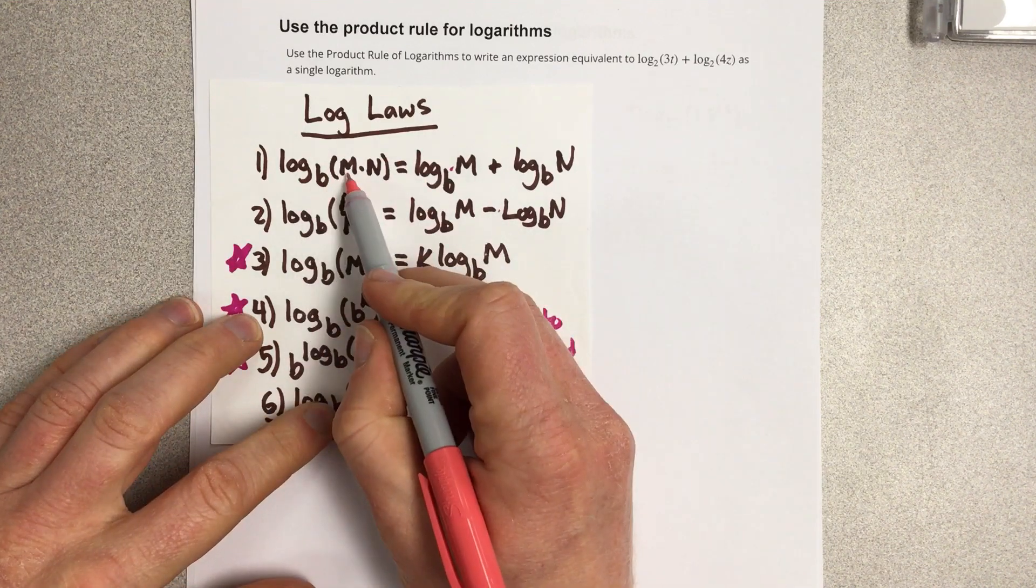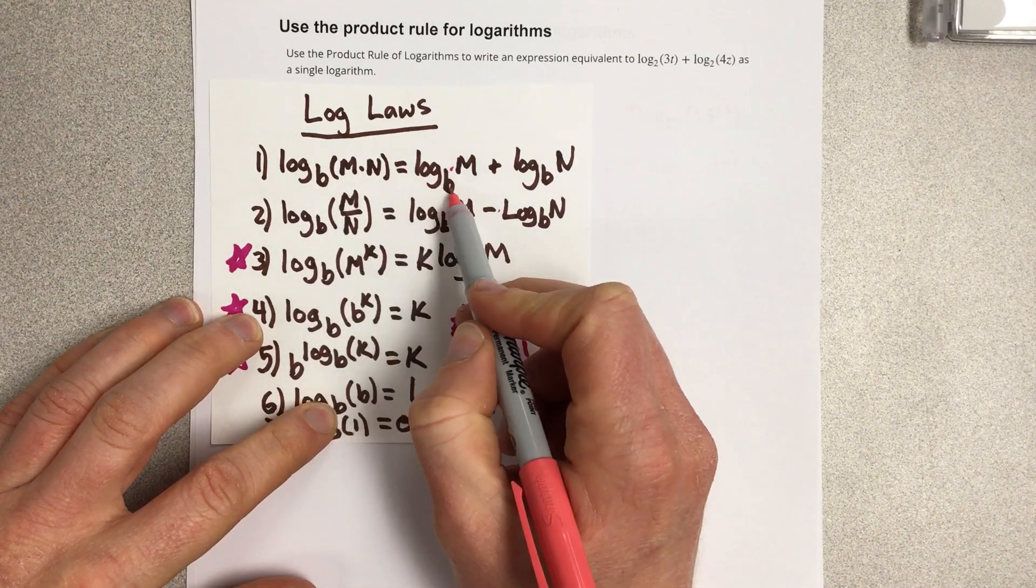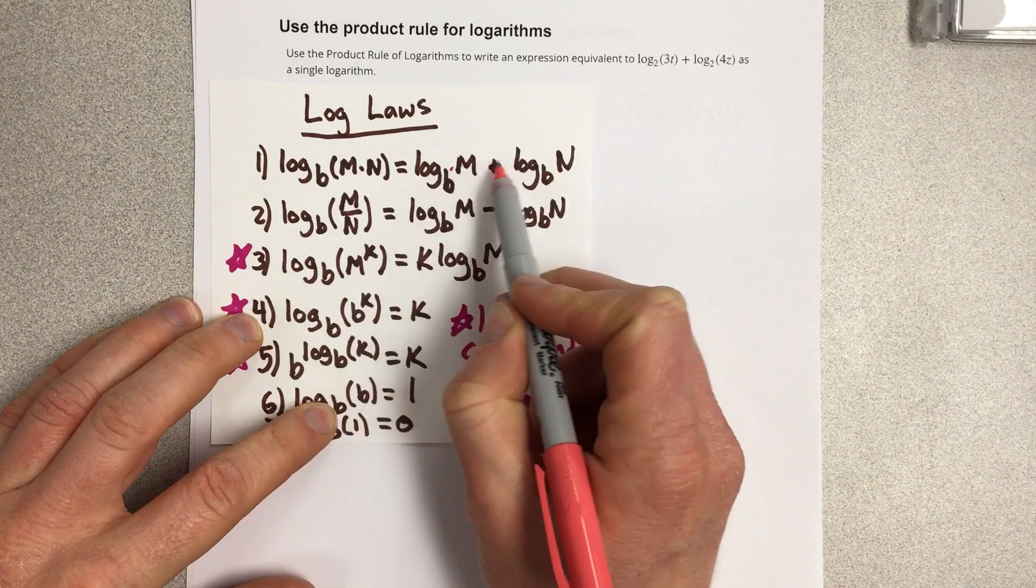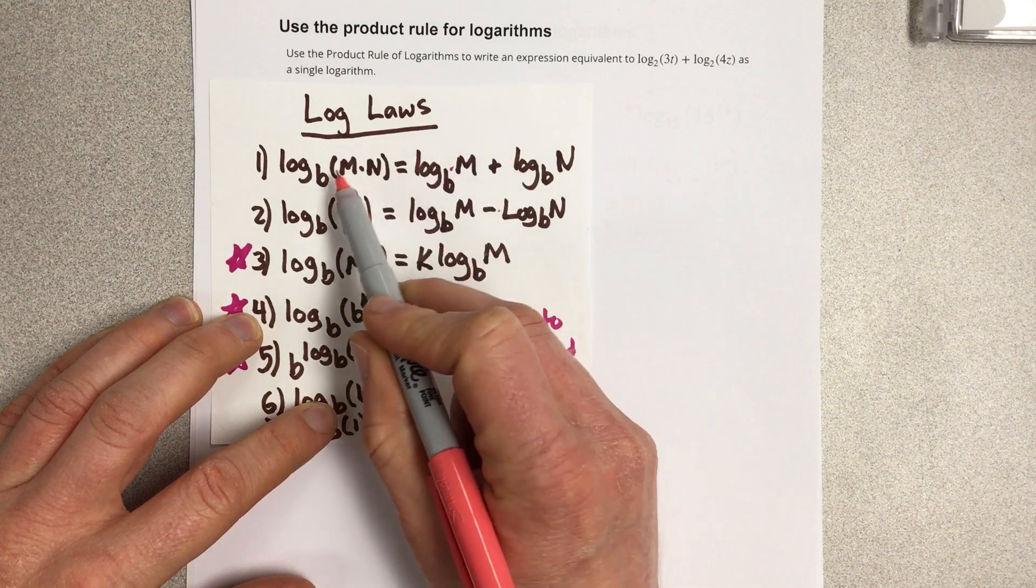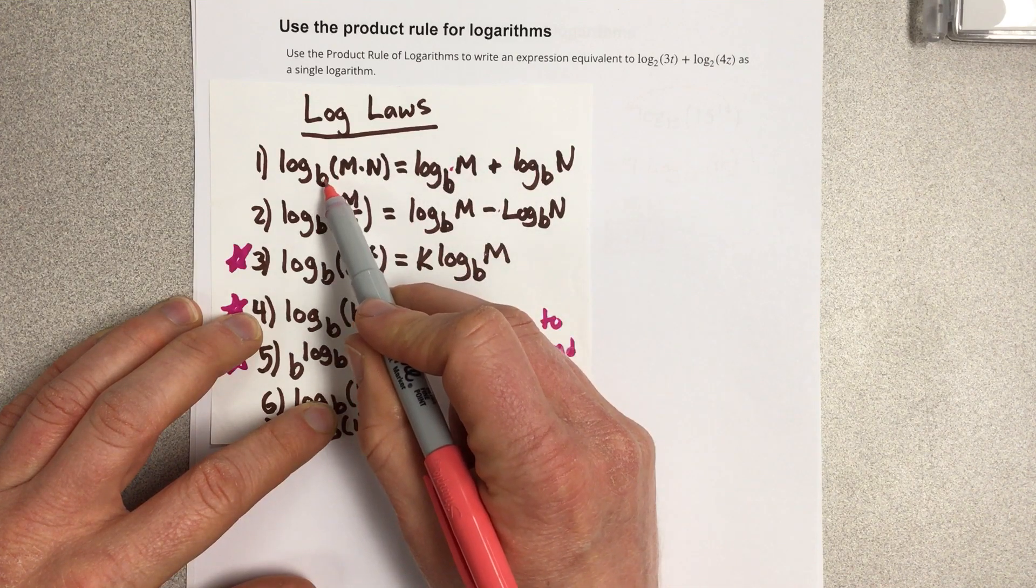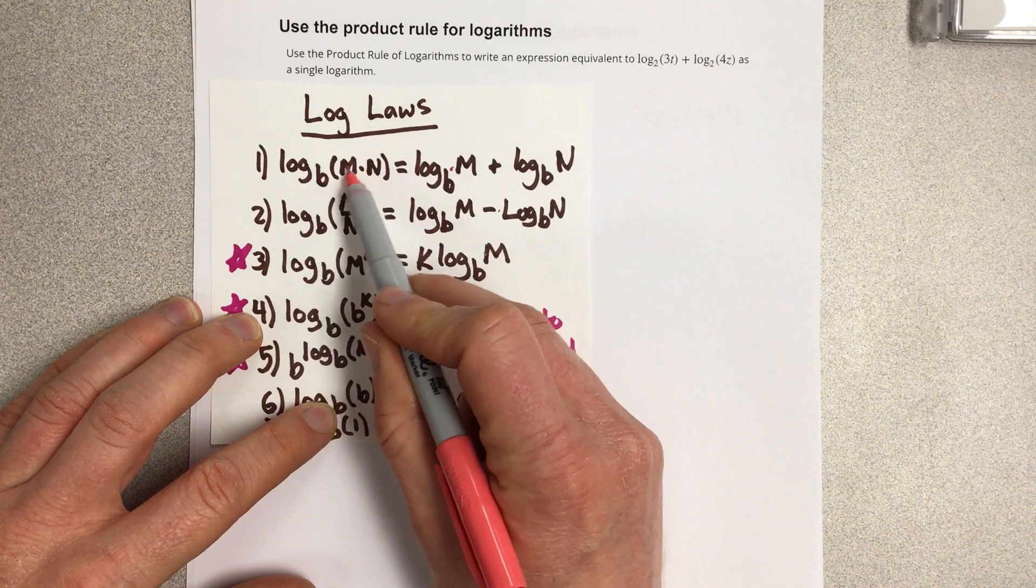So log base B of M times N is equal to log base B of M plus log base B of N. And then vice versa, if you had two logarithms with the same base being added, you can write that as one multiplication of the insides M times N.